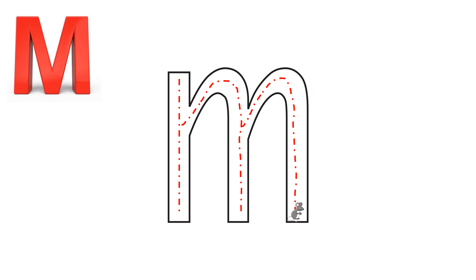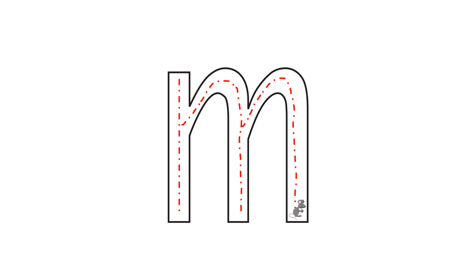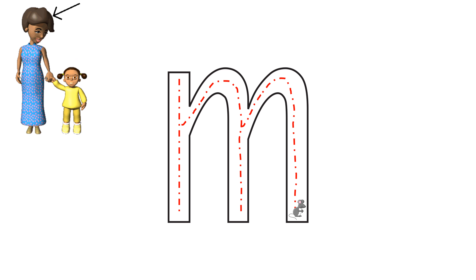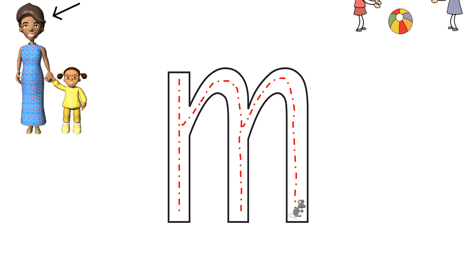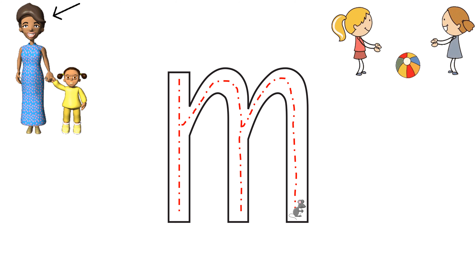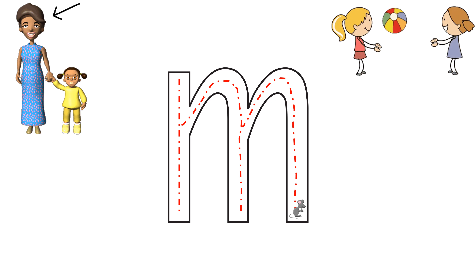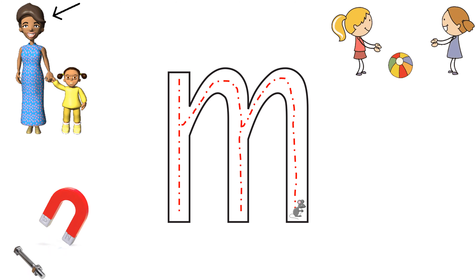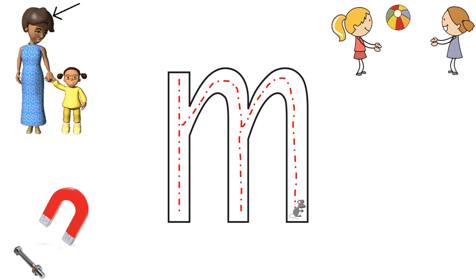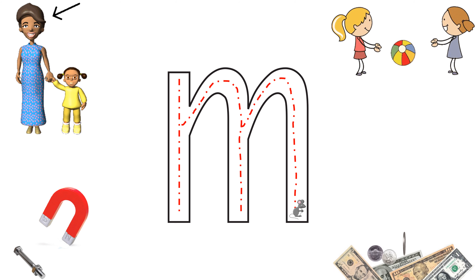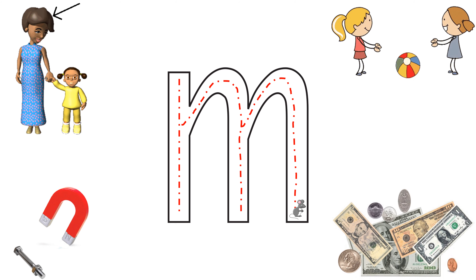The letter M. M is for mother. M is for missing. Magnet. M is for money.